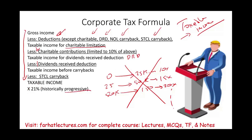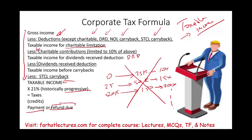You take taxable income times 21%, and in any particular problem where you are given taxable income, just multiply by 21% to get your taxes. If you have any business credits, you deduct those from your taxes. This tells you whether you have a payment due — meaning you did not pay enough taxes — or a refund due, meaning you overpaid.